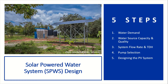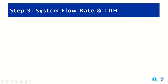We hope you've been enjoying the video series so far on the five steps of solar-powered water system design. This video is going to focus on step three: system flow rate and total dynamic head. Step three of designing solar-powered water systems involves calculating the system flow rate and TDH, or total dynamic head.